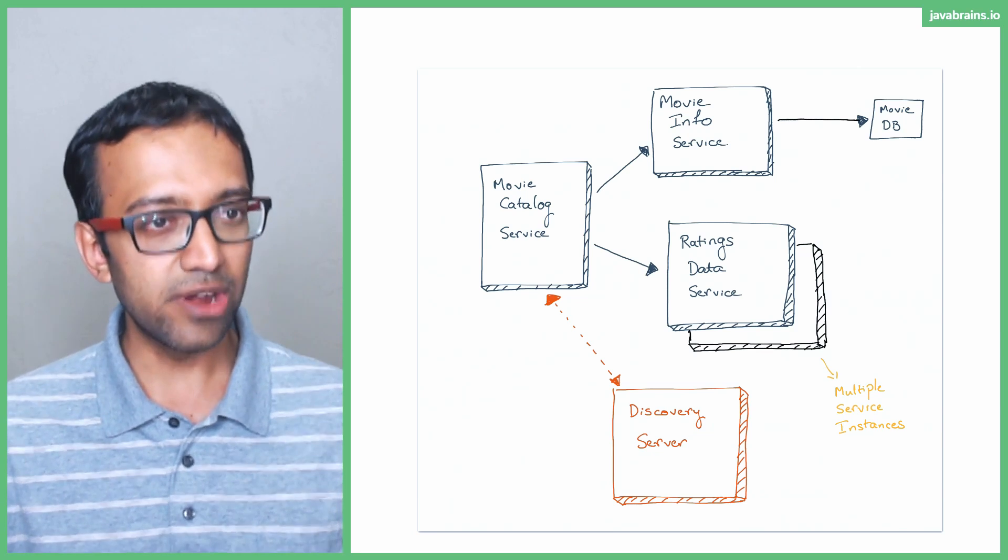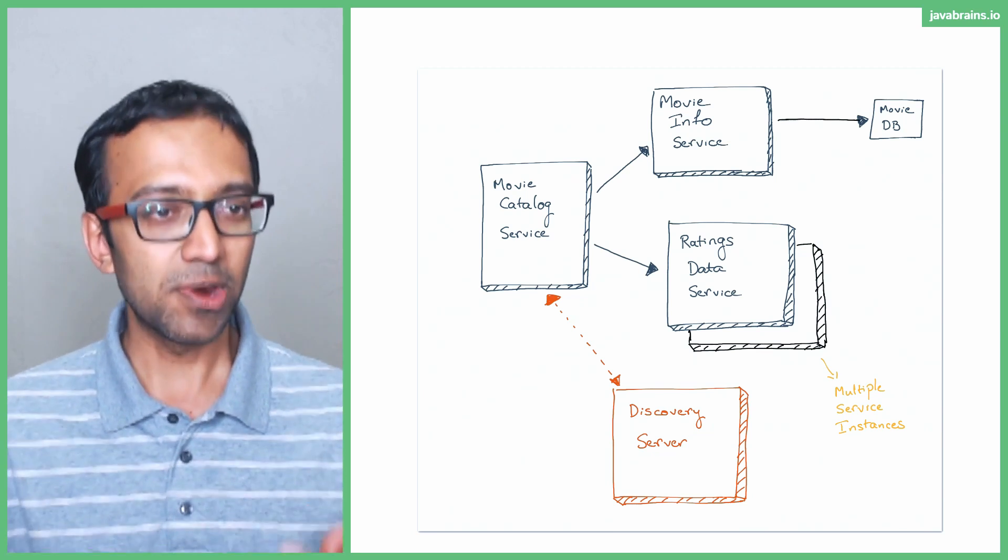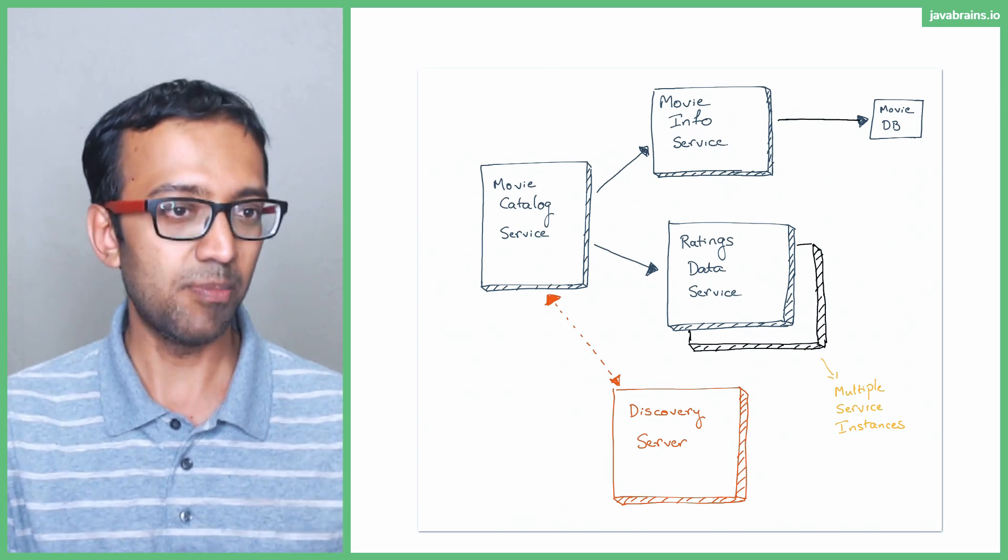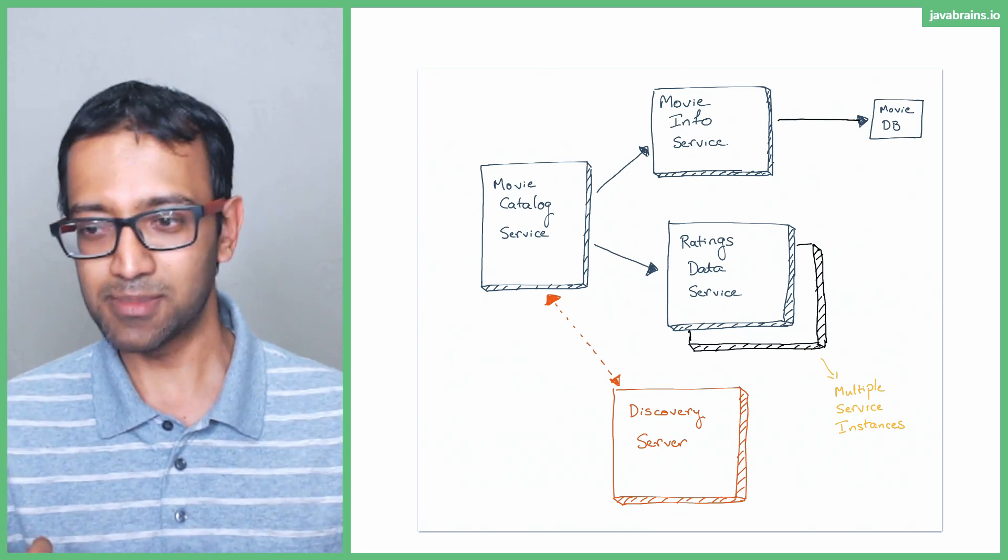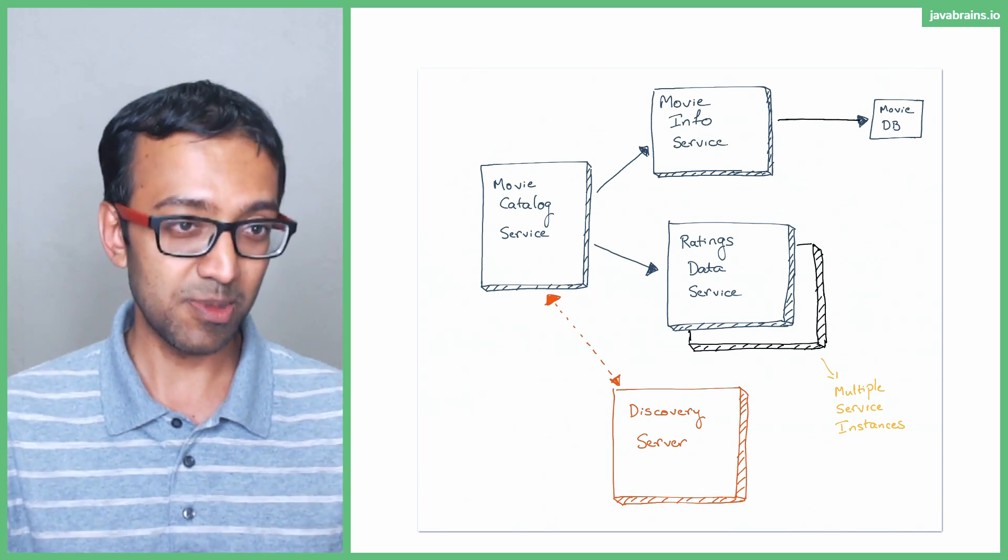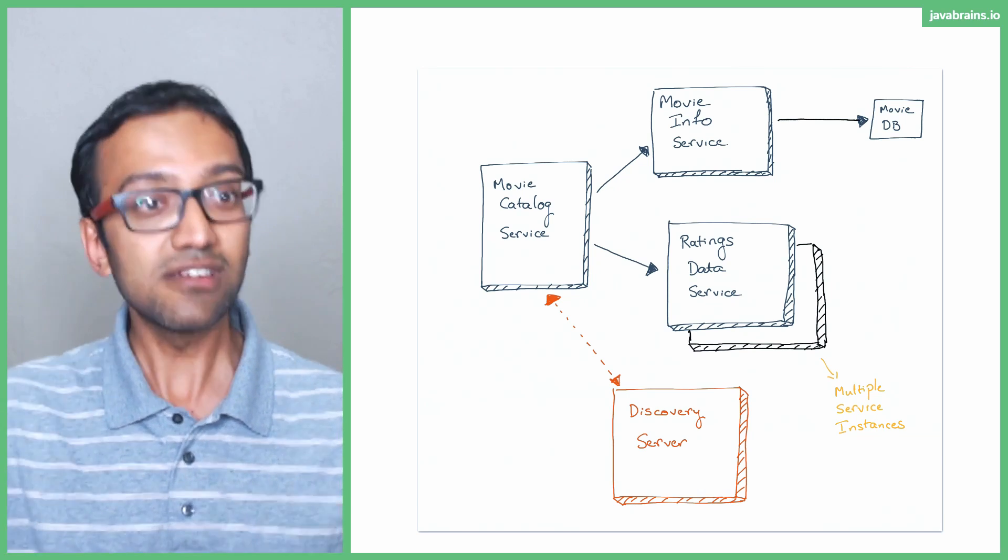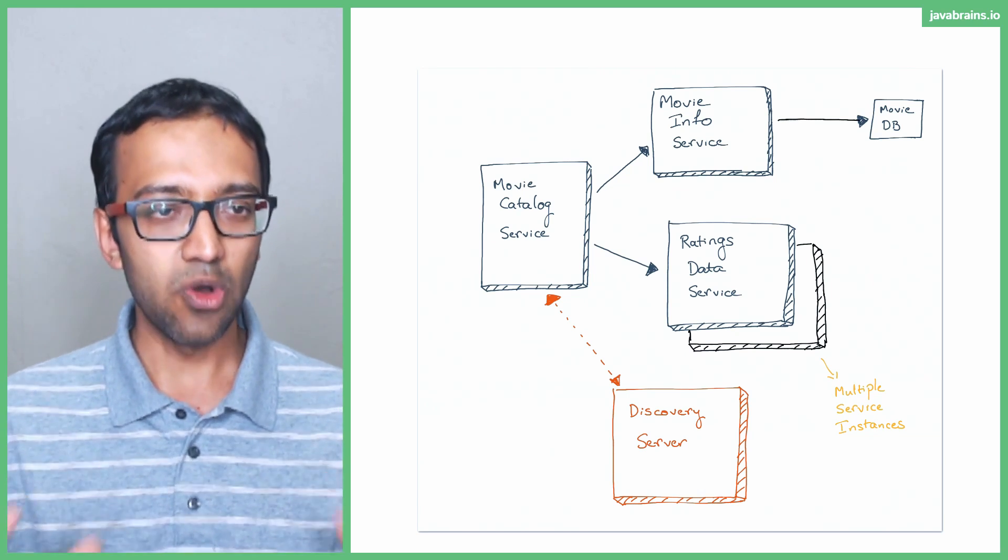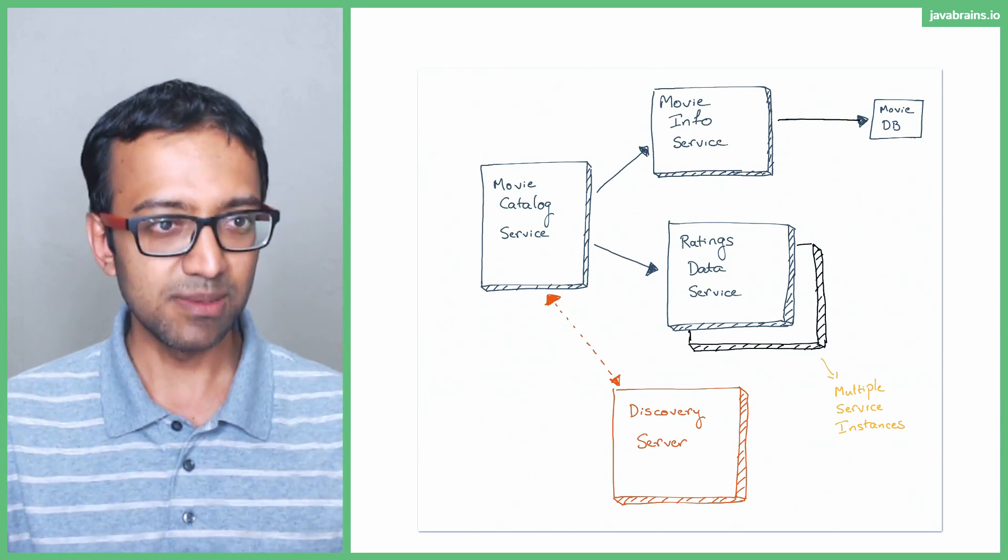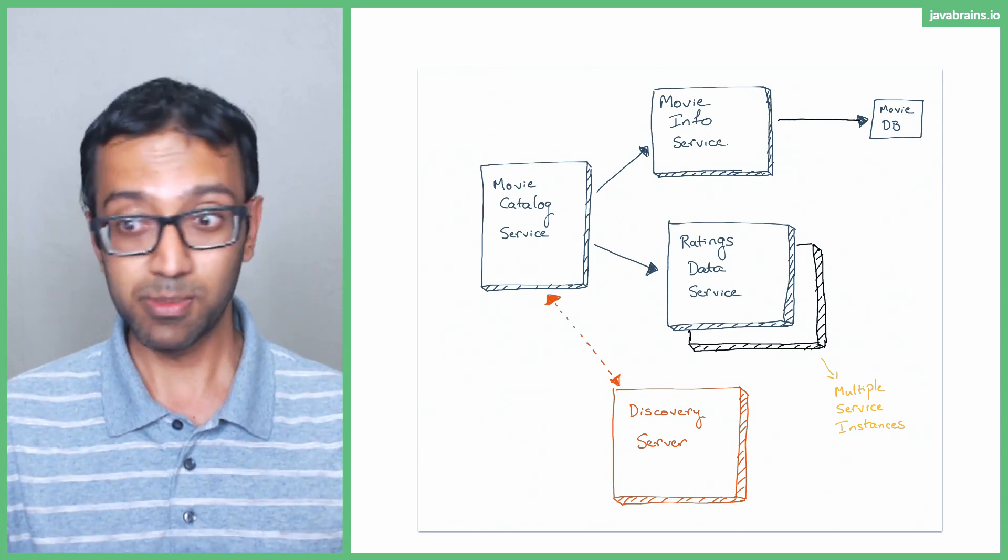So having multiple instances is good anyway because you can share the load and have it scale better. But then also if one instance were to go down, the other can temporarily handle the load while either there's an automated system of bringing something up or you call the support guy late in the middle of the night and say hey, things have gone down, fix it. And that guy goes up and fixes it and things come back up either way. You're not having the whole application go down because one instance goes down. Fairly simple solution to a fairly simple problem.